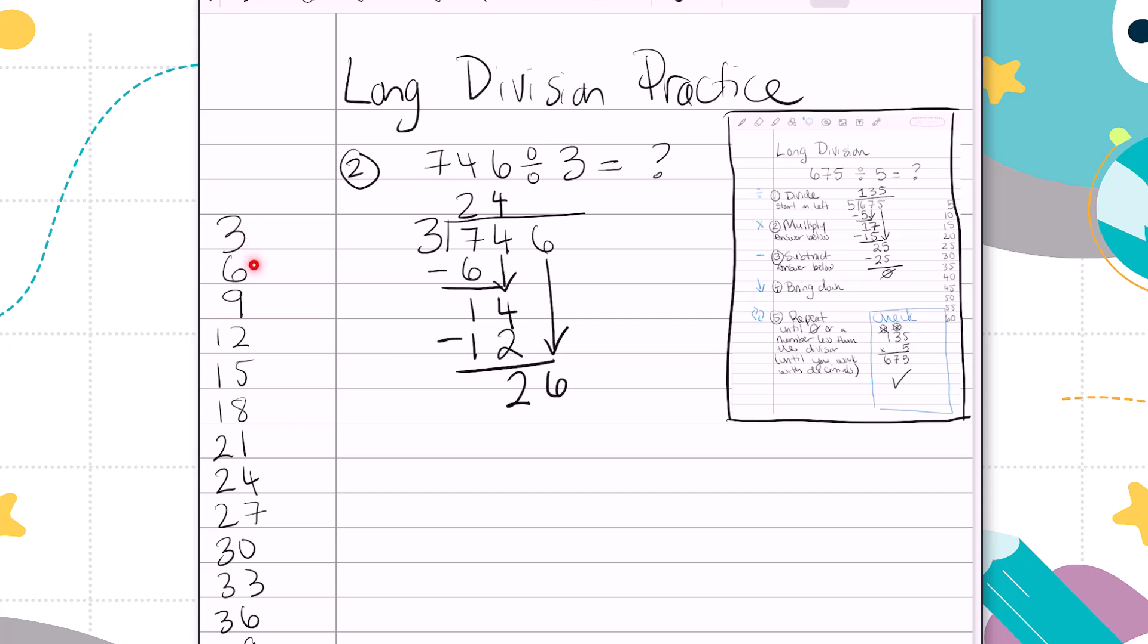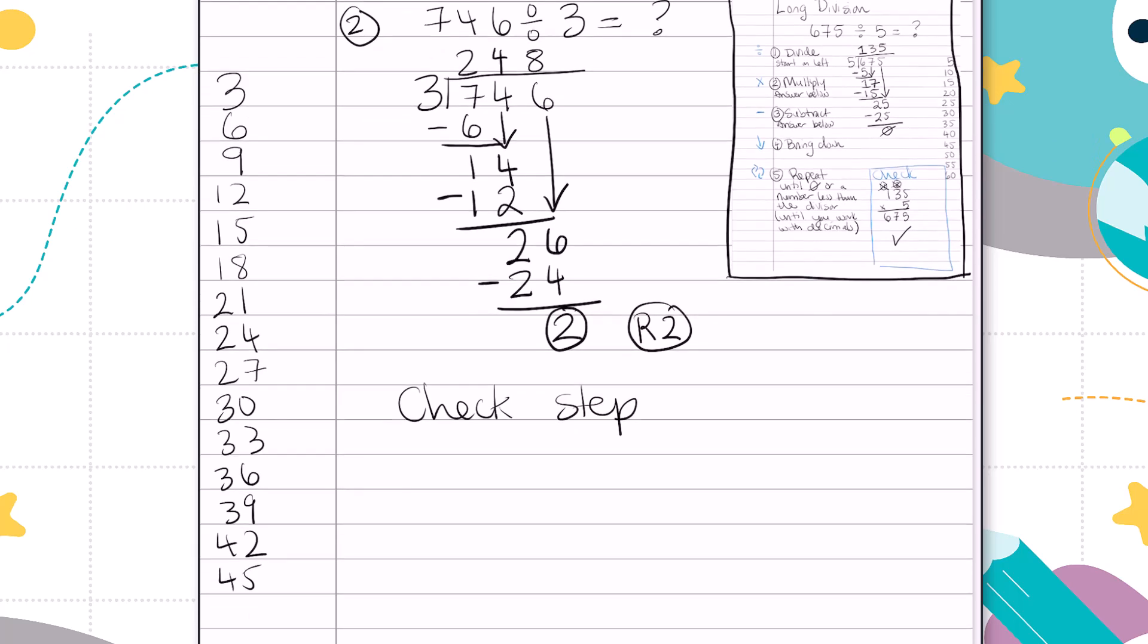That gives us 26. I'm going to repeat my steps. 26 divided by 3. The highest I can get is 24. That's 8 steps. So I'm going to write the 8 up top. 8 times 3 is 24. 26 minus 24 is 2. And I can't do 2 divided by 3. We're not going into the decimals place for this video. That means I have a remainder of 2.